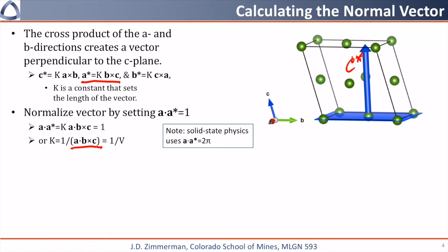This quantity is the vector triple product, and it returns the volume of the parallelepiped defined by the three vectors, so k is equal to one divided by the volume. So I've written a star is equal to b cross c divided by the volume.